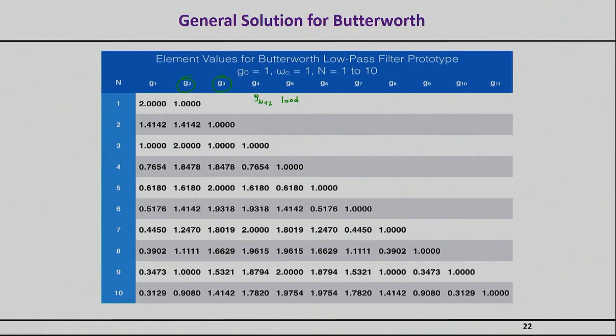If you choose a second order filter, then you will have a series L or a shunt C, but the last element, your g3 in this case, is the load and is again 1 ohm.